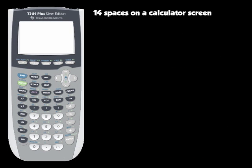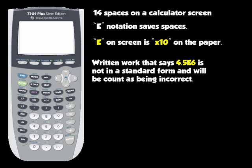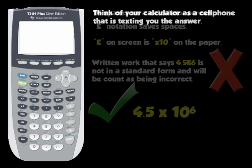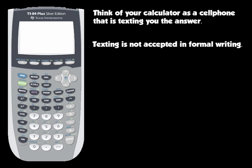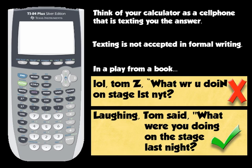The reason E notation is used on the calculator is because there's a limited number of spaces on the screen — E takes one of the 14 spaces, but typing x10 takes three spaces. When turning in work, do not write 4.5E6 — that's calculator speak or geek speak, not formal notation. You need to write it as 4.5 times 10 to the 6. Think of the calculator as texting you the answer to save space, and just like texting is not accepted in formal writing, neither is E notation in your math work.